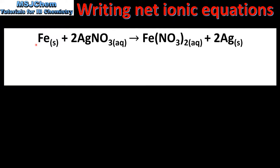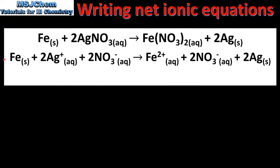In our third example we have the reaction of iron with silver nitrate. We then write the complete ionic equation for the reaction. The aqueous silver nitrate has been broken down into silver ions and nitrate ions. Note that the coefficient for the silver nitrate must also be used for the silver and nitrate ions.